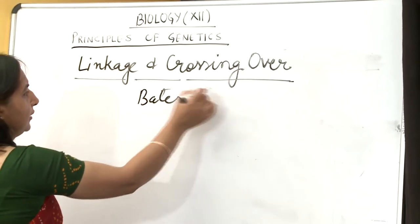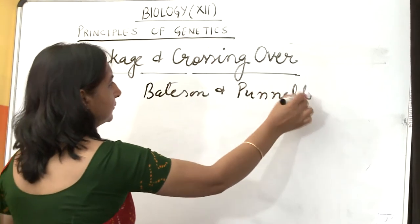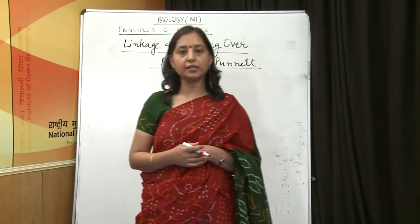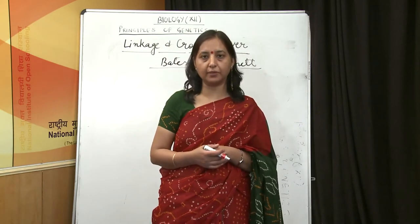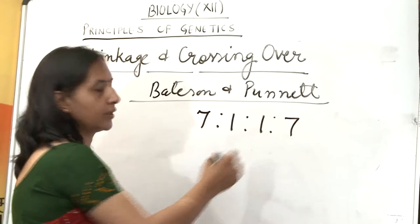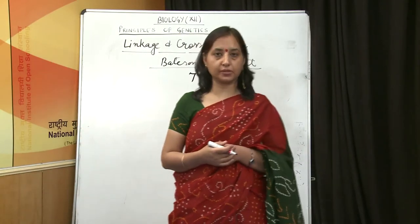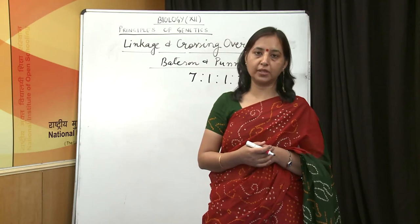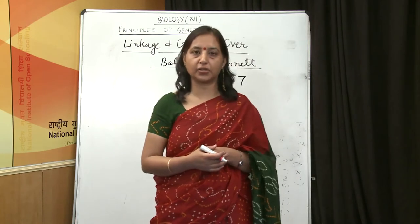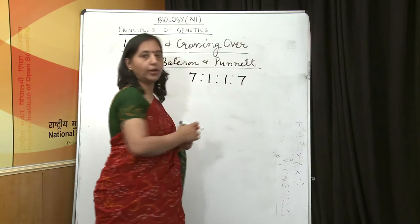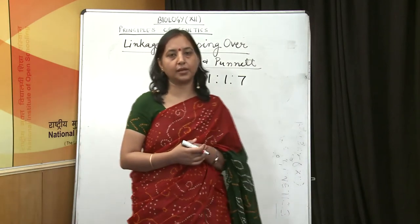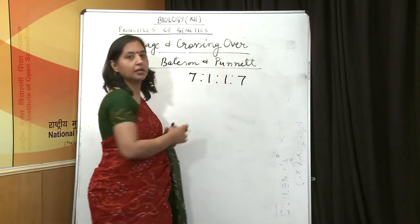This phenomenon was observed by Bateson and Punnet. They did a dihybrid cross and found that instead of the expected 9:3:3:1 ratio, they observed a ratio of 7:1:1:7. This observation is only possible when the linkage phenomenon is present — that is, the tendency of two or more genes to be inherited and passed on to the next generation together. But at the same time, quite a few recombinants and new combinations were also seen, and these new combinations are only possible due to another phenomenon called crossing over.